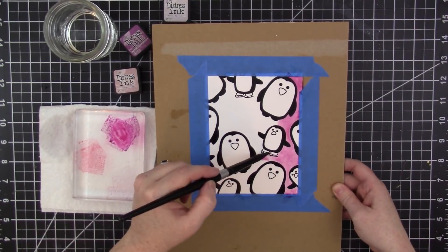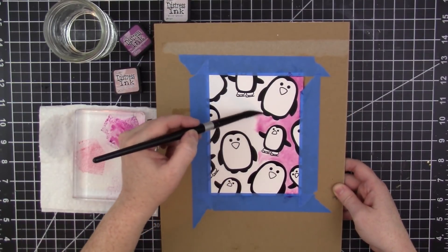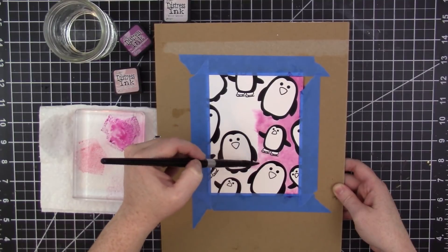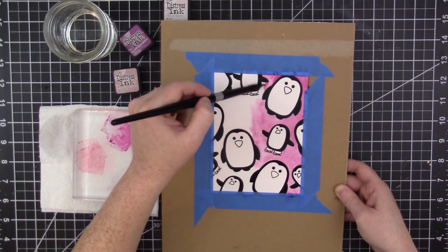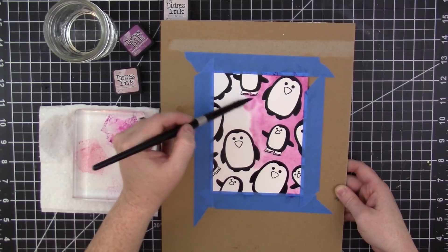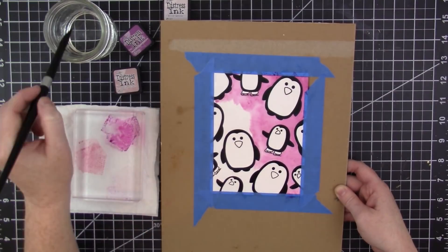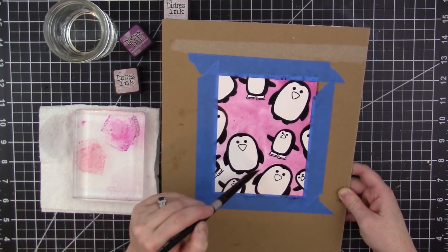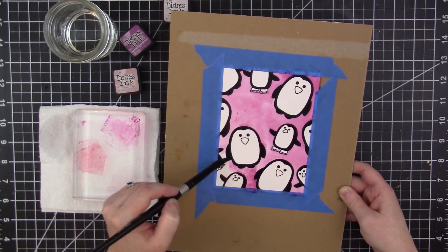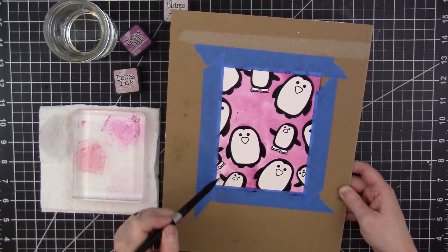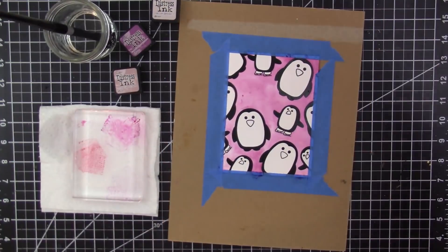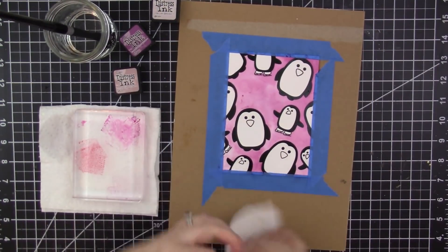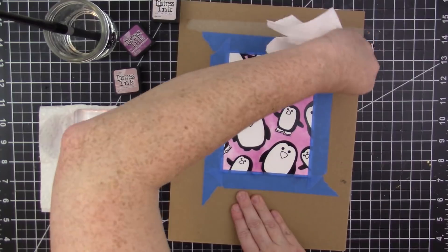And so it didn't really add much color to this project. It's mostly the Seedless Preserves and Victorian Velvet that combine into this really pretty pinkish-purple color. But I'm definitely going to use this color combination again on another card with an ink blending tool because the Milled Lavender really is pretty with the other two colors.